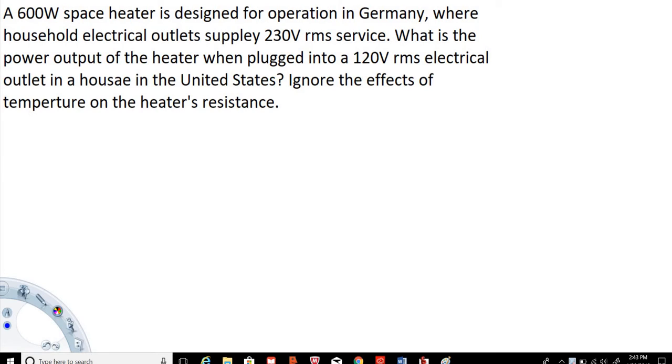A 600 watt space heater is designed for operation in Germany where the household electrical units supply 230 volt RMS service. What is the power output of the heater when plugged into a 120 volt RMS electrical outlet in a house in the United States? Ignore the effects of temperature on the heater's resistance.